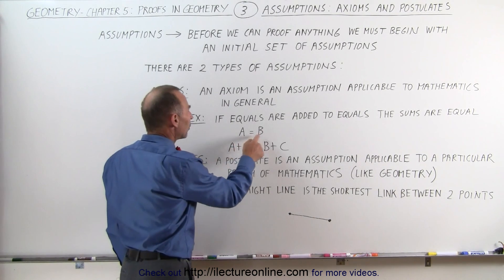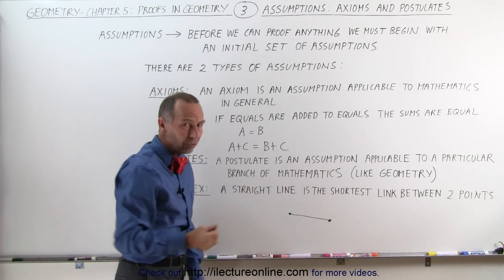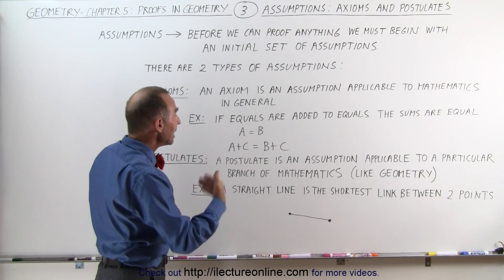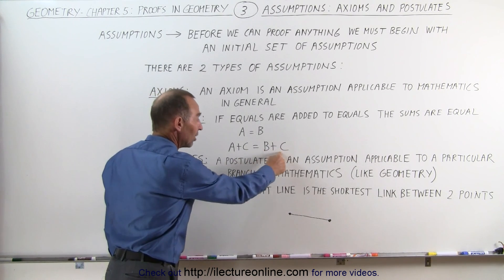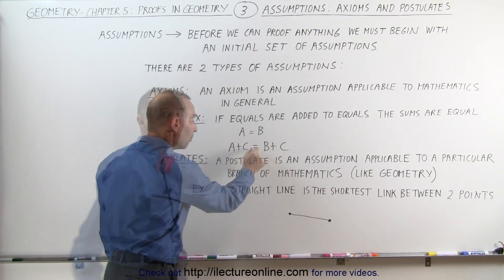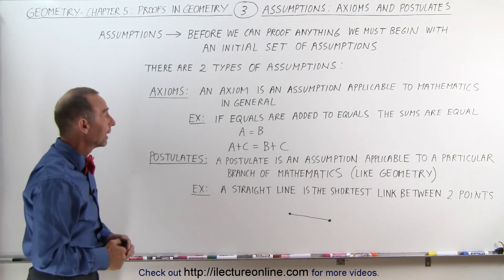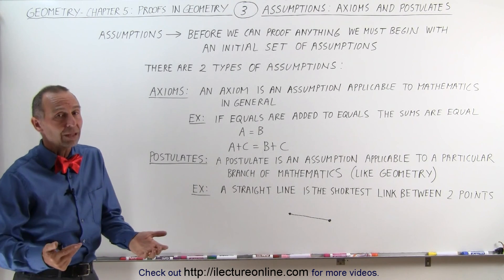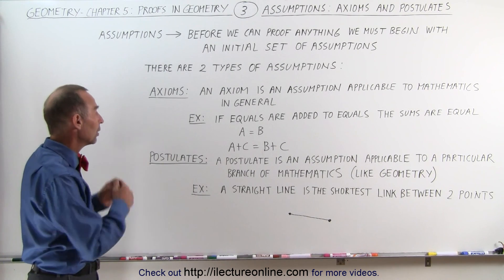If we know that A equals B, and then we add equals - we add C, and of course C equals C - when we add equals to equals, the sum of the two must be equal to one another. A + C = B + C. That is an assumption. We accept that. We don't need to prove it.